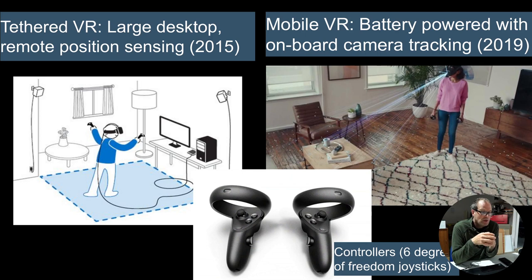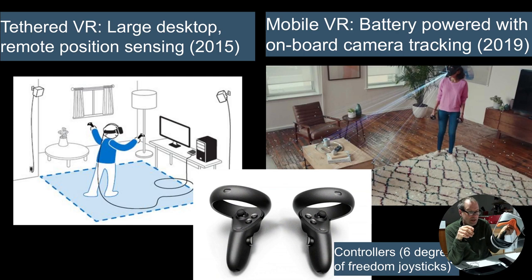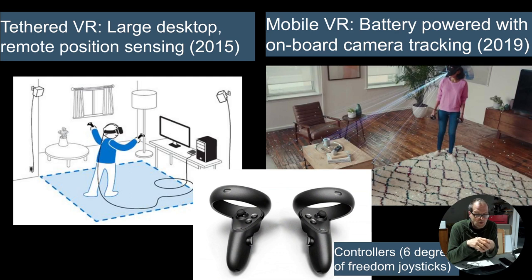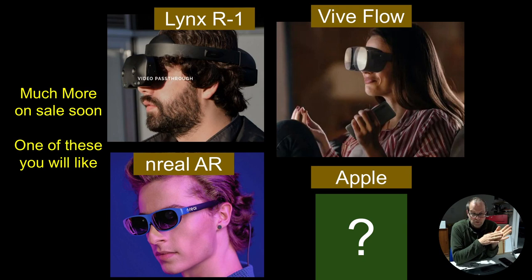VR has gone through rapid evolution, beginning in 2015 when it was a tethered device with remote base stations and external computer and a lot of setup, to now basically a mobile one that can operate on a single headset. You've got these special joysticks which have evolved to this standard format. In the future, it's evolving faster than we know. We've got various different things probably coming onto the market this year, including ones with cameras on the front that pass the picture through, the Nreal glasses where you can see through them, and everyone knows Apple is going to be coming out with something.